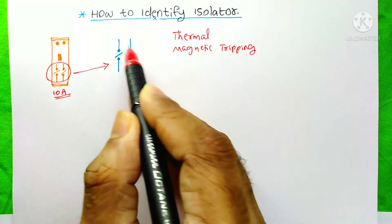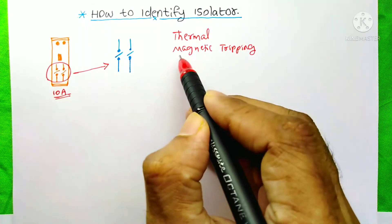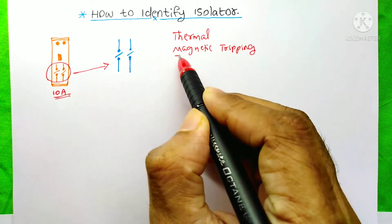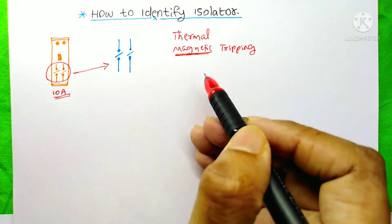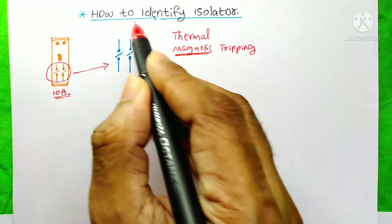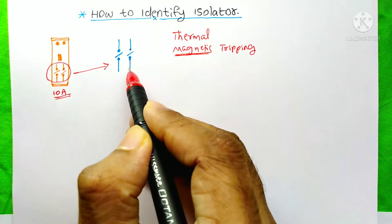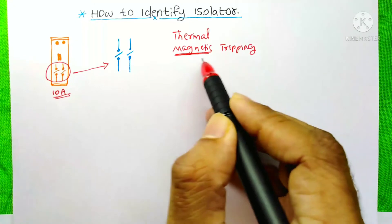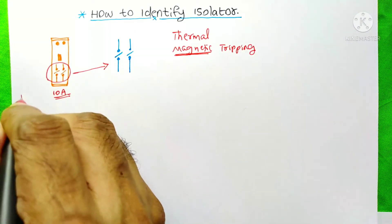That means it will not get tripped automatically. And at the same time it will not give you the protection of this magnetic tripping also. That means if any short circuit happens on this circuit then this isolator can't trip automatically because it will not give you any magnet tripping characteristics.